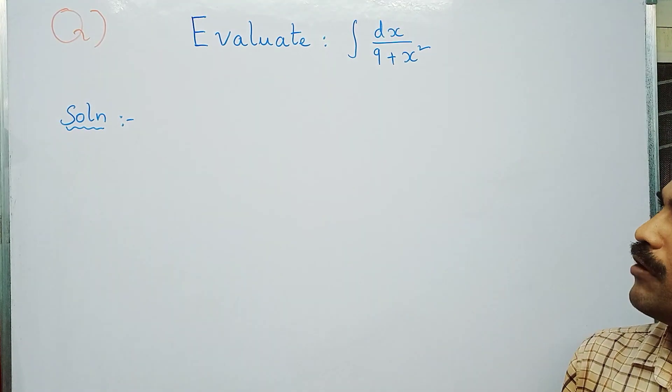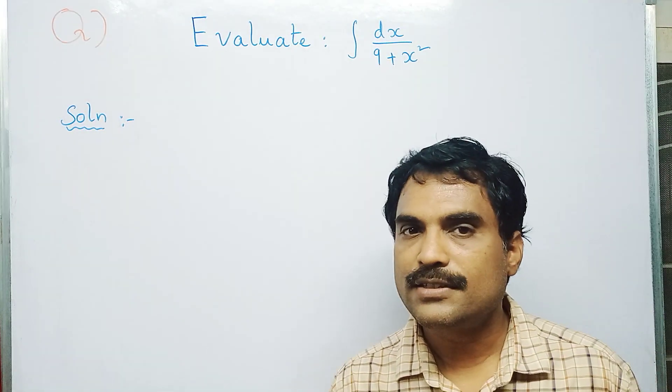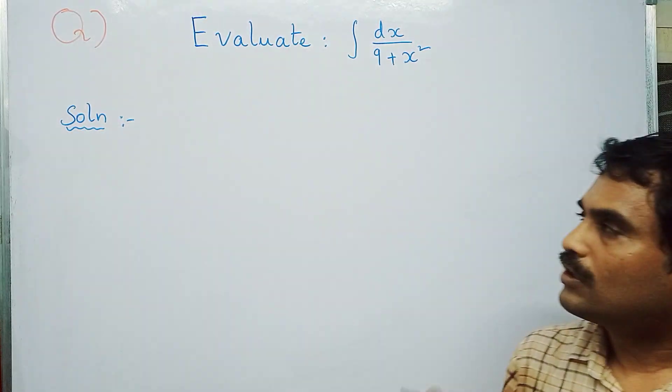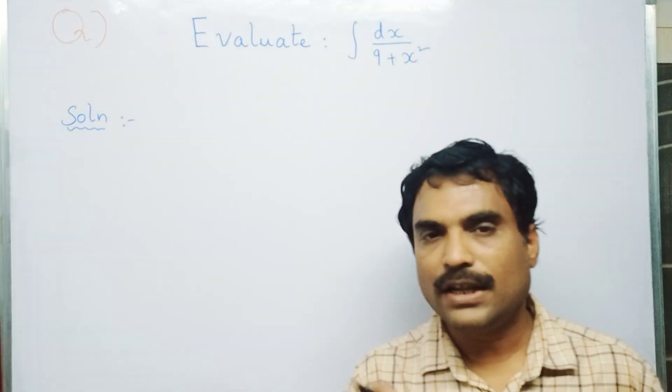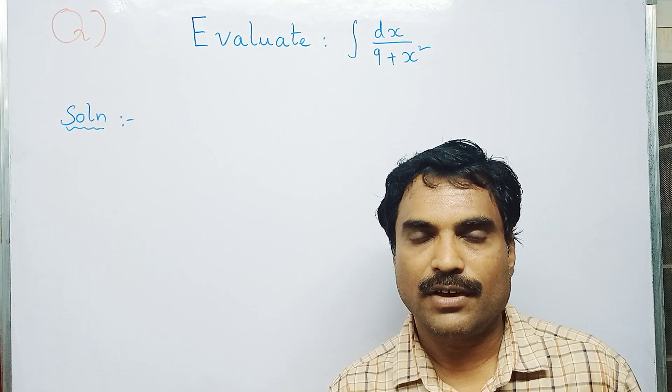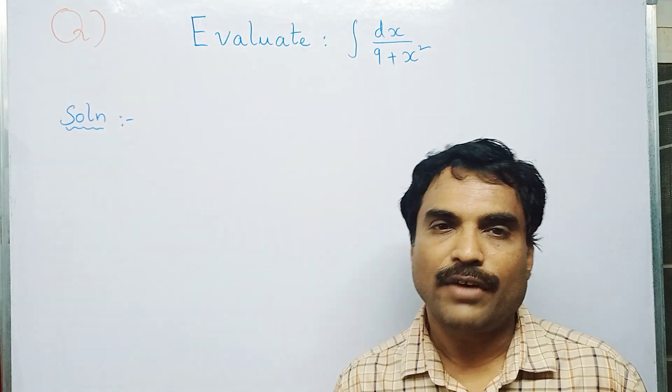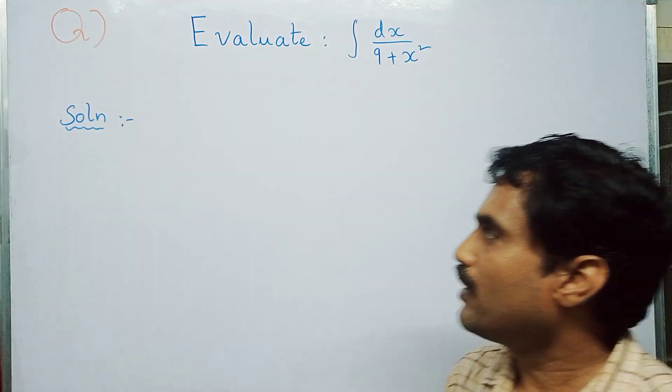Because I can write 9 as 3 squared, so then I can apply that formula of integral dx by a squared plus x squared as 1 by a tan inverse of x by a. So by using this formula I can find the solution.